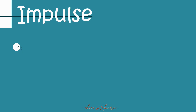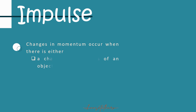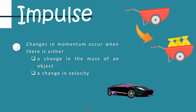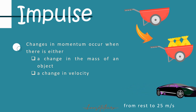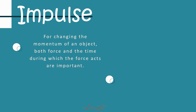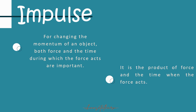What will happen if there is a change in the mass or velocity of an object? It simply means there is a change in momentum. Changes in momentum occur when there is either a change in the mass of an object or a change in velocity, or both. For changing the momentum of an object, both force and the time during which the force acts are very important. Impulse is the product of force and the time when the force acts.